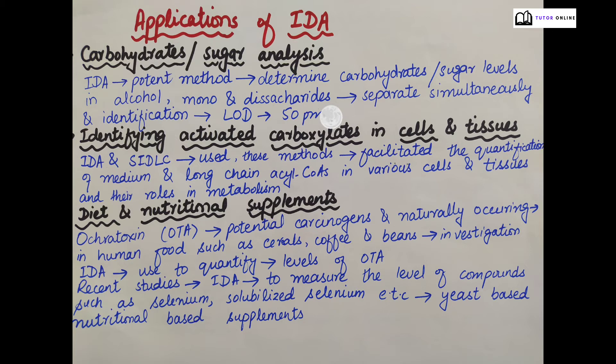For identifying activated carboxylates in cells and tissues, IDA and stable isotopic dilution liquid chromatography are used. These methods have facilitated the quantification of medium and long-chain acyl-CoA in various cells and tissues and their roles in metabolism.